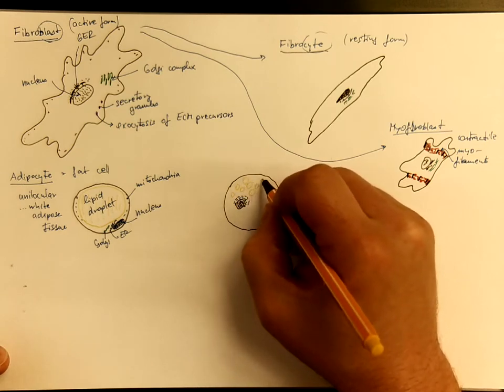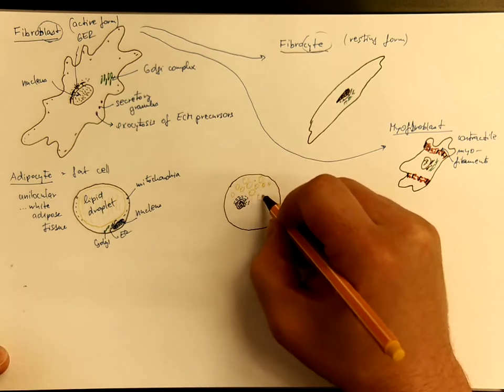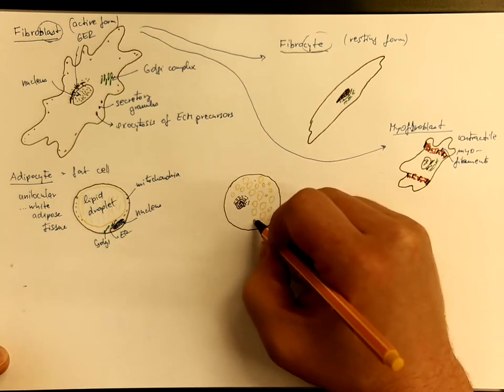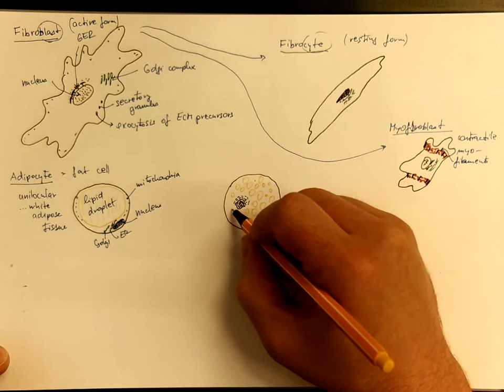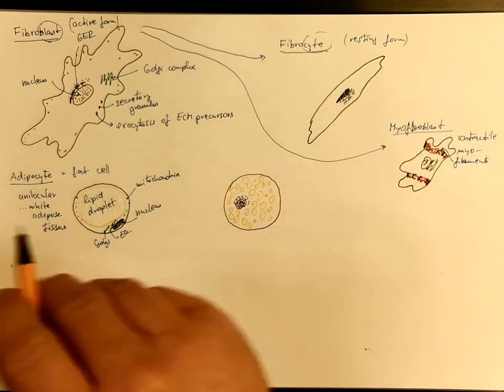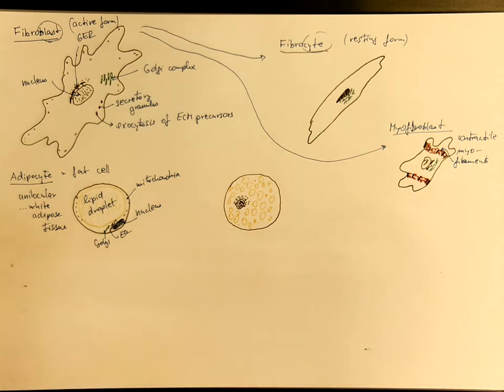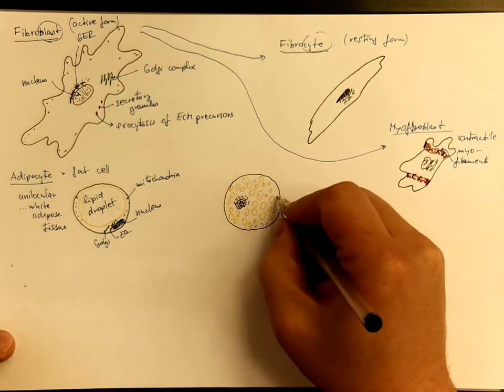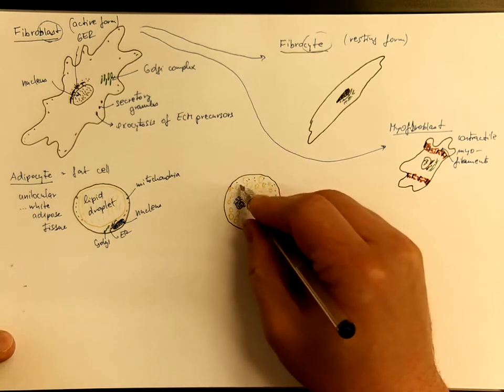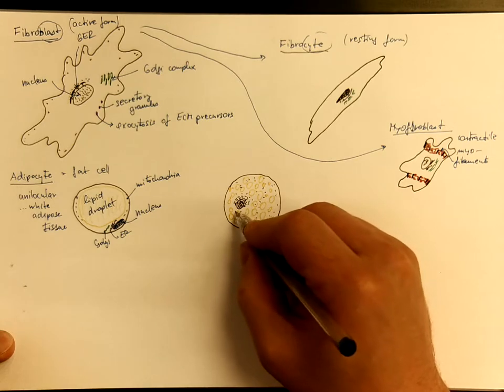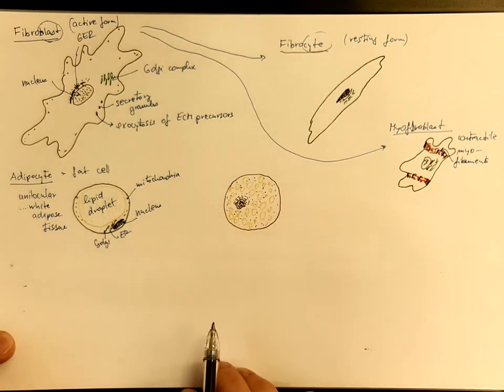Hundreds, perhaps thousands of various lipid droplets all over the cell. And the mitochondria are significantly more numerous compared to the unilocular type.